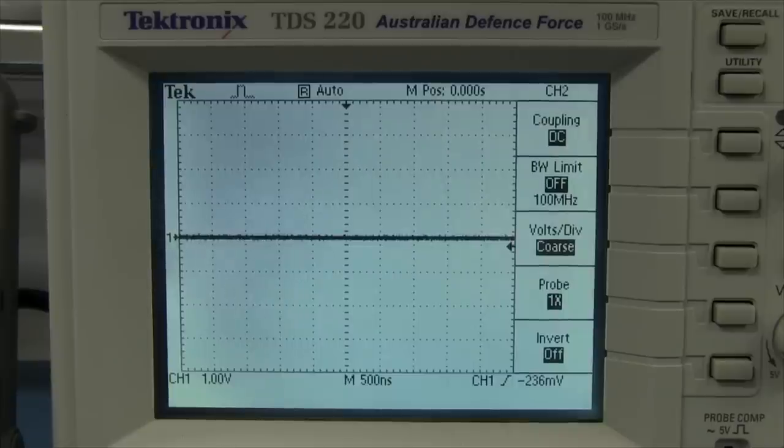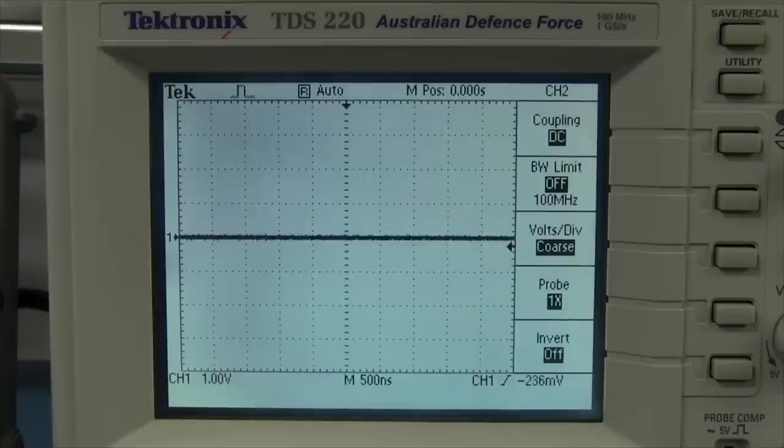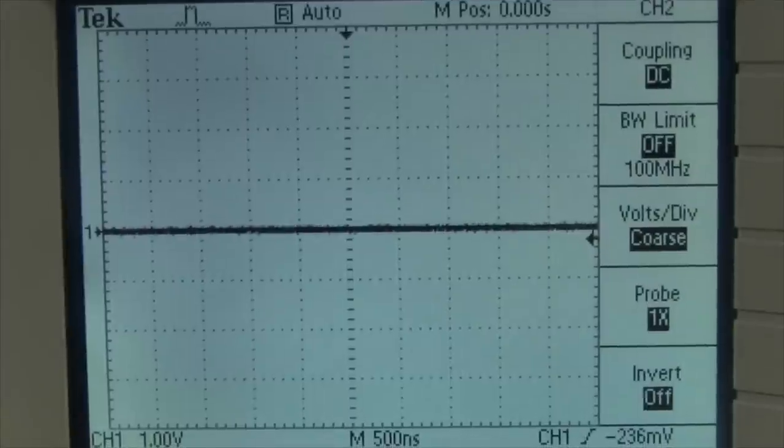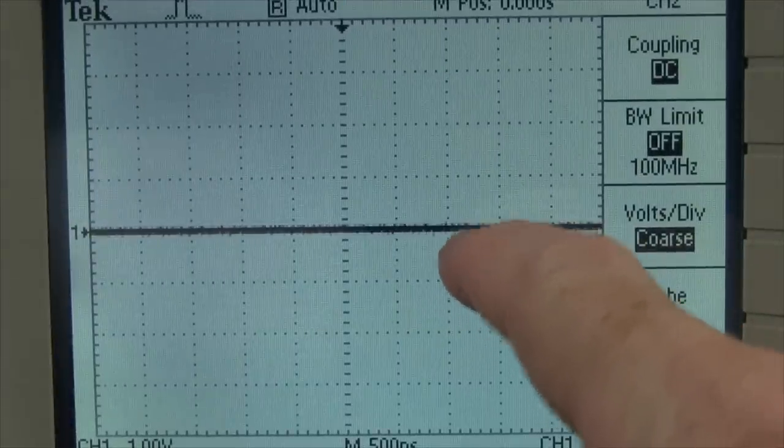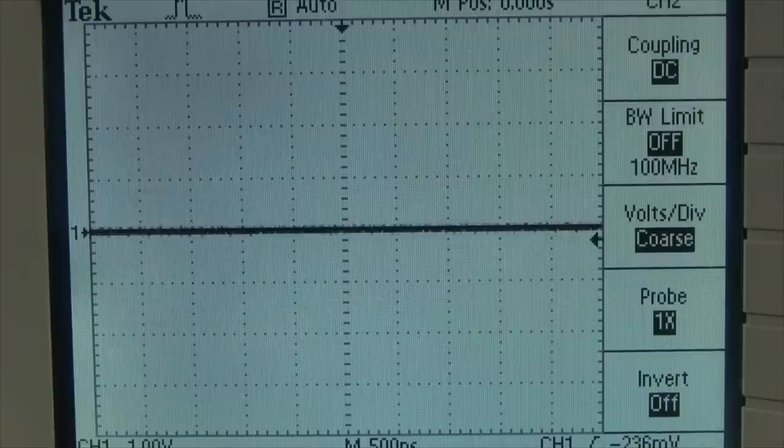And then you go to something like this ancient TDS220, 100 megahertz bandwidth analog scope. One of the first real-time bandwidth scopes on the market. And well, take a look at the waveform. It's, you know, it's a bit fuzzy. Look at the noise on there. You know, anyone would say that is noisier than that analog Tektronix 2225 we saw before.